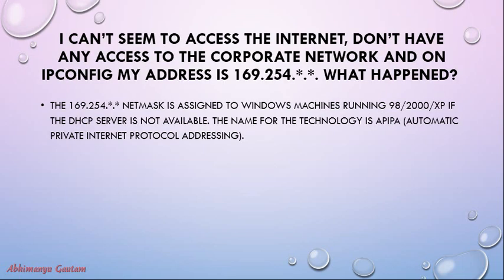Question: I cannot access the internet, I have no access to the corporate network, and on ipconfig my address is 169.254.x.x — what happened? The 169.254 address is assigned to Windows machines (98, 2000, XP) when the DHCP server is not available. The technology is called APIPA — Automatic Private IP Addressing.